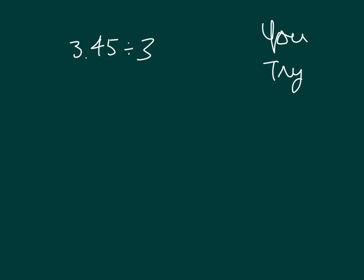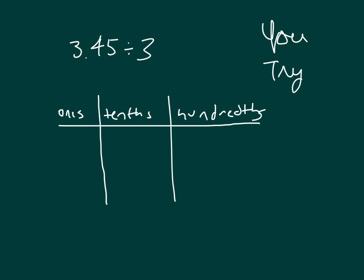Your turn to try. Set up a place value chart. Also show me the written method. Pause the video while you do your work. All right, so there's our place value chart. We model our number first. And then how many groups are we making to divide this into? Right, 3.